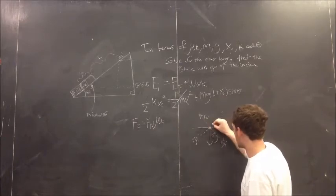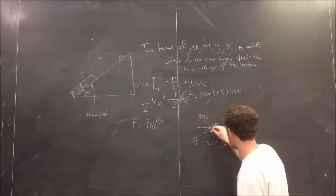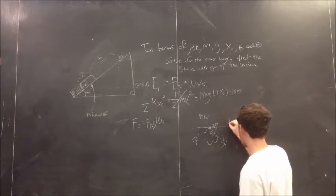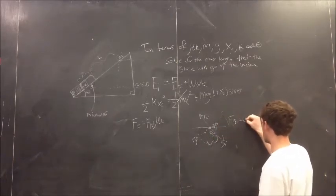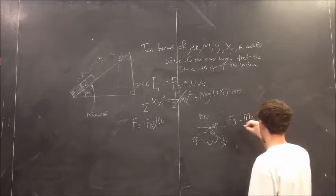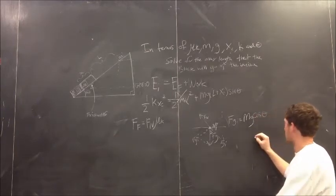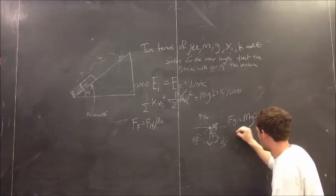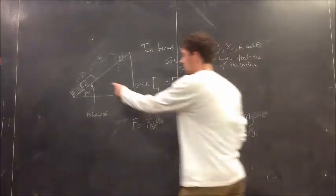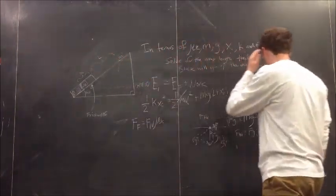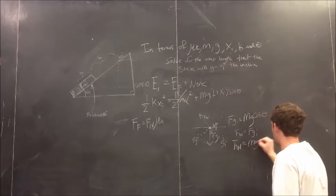We know this angle right here is theta, which means this angle right here is theta. Oh, sorry. This angle here is theta. So, fgi is equal to the force of gravity, which is just mg, times cosine of theta. And then, fn must equal fgi, since the block is neither going through the surface of the incline or flying off randomly in some random direction. So, fn equals mg cosine theta.